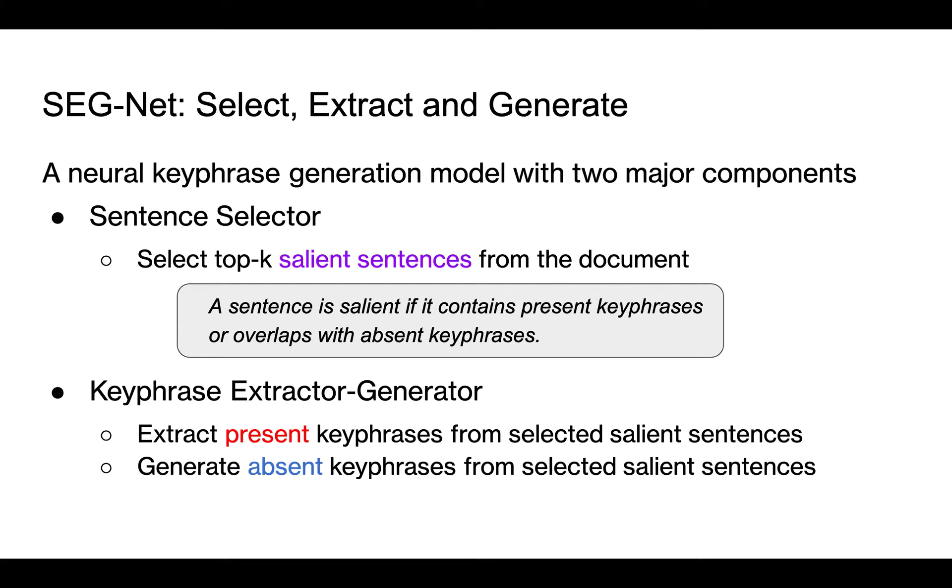A sentence selector. It reads the full document and selects the top k-salient sentences. We define a sentence as salient if it contains present keyphrases or overlaps with absent keyphrases. The second component is a keyphrase extractor generator. It is in charge of extracting present keyphrases and generating absent keyphrases from the selected salient sentence separately.